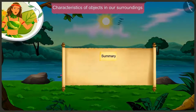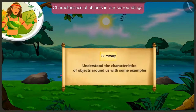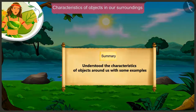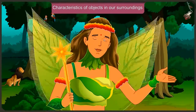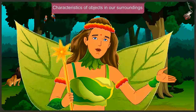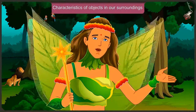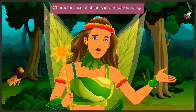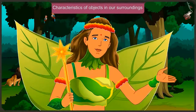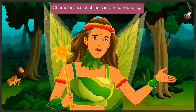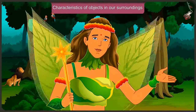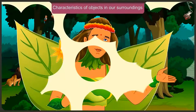Today we understood the characteristics of objects around us with some examples. In the next video, we will see the mistakes we make while understanding the characteristics of the objects around us.